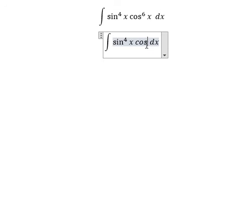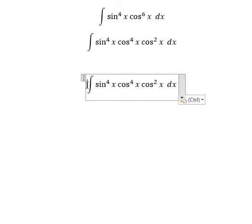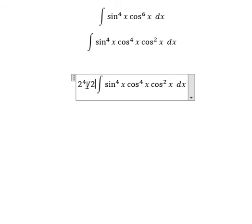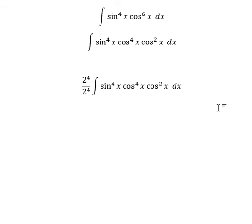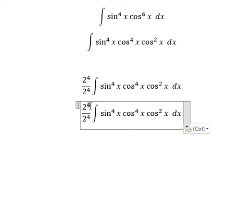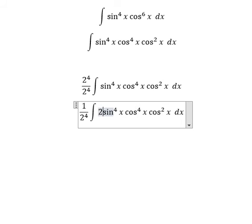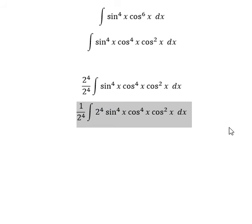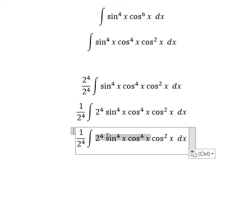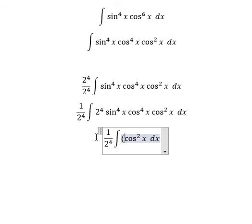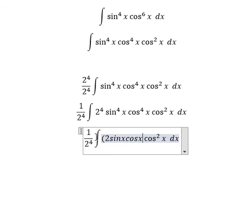We can split cosine x to the power of 6 into cosine x to the power of 4 multiplied by cosine x squared. Next, we have 2 to the power of 4 over 2 to the power of 4, because I want to put the number 2 inside — cosine x, cosine x — everything to the power of 4. So this one here, we can write as cosine x, cosine x to the power of 4.